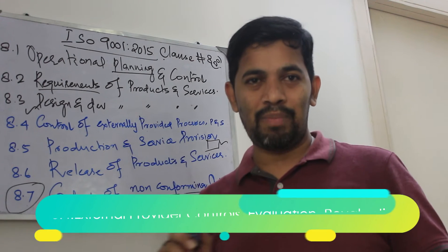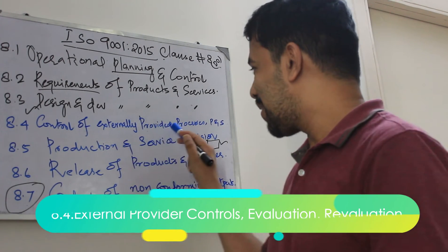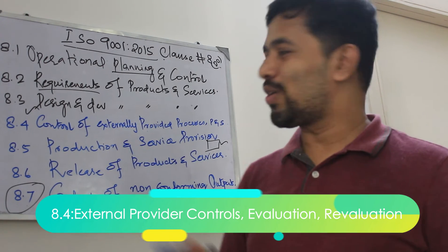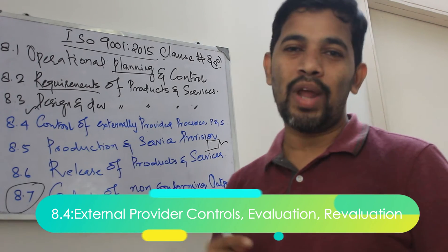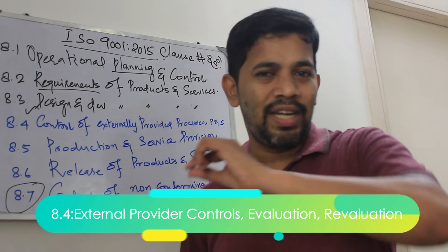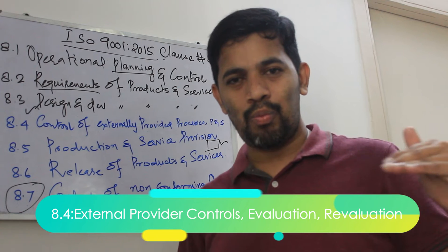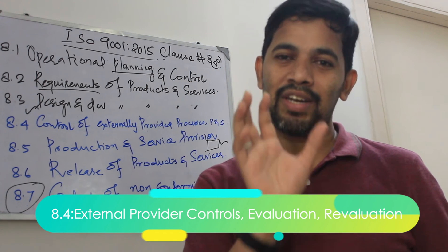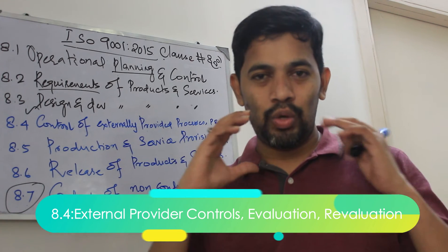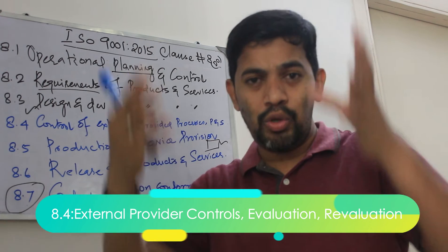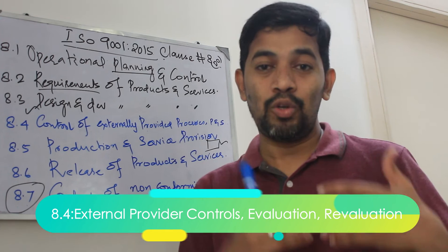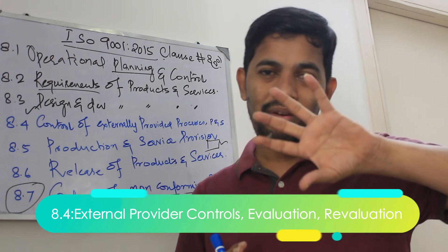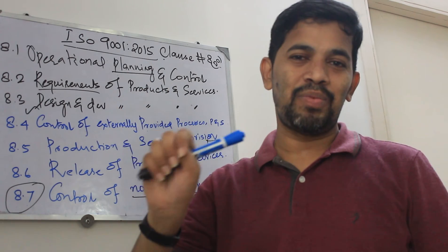8.4 is control of externally provided — the external provider is nothing but the supplier. How do you control it? How do you evaluate the supplier, assess the supplier, re-evaluate the supplier, and maintain the record? These are all important aspects of 8.4. Throughout 8.3 and 8.4, you will find two key documentation requirements: 'retain documented information' — that is a record — and 'maintain documented information' — that is a document. These sections stress so much on both retain and maintain documented information.